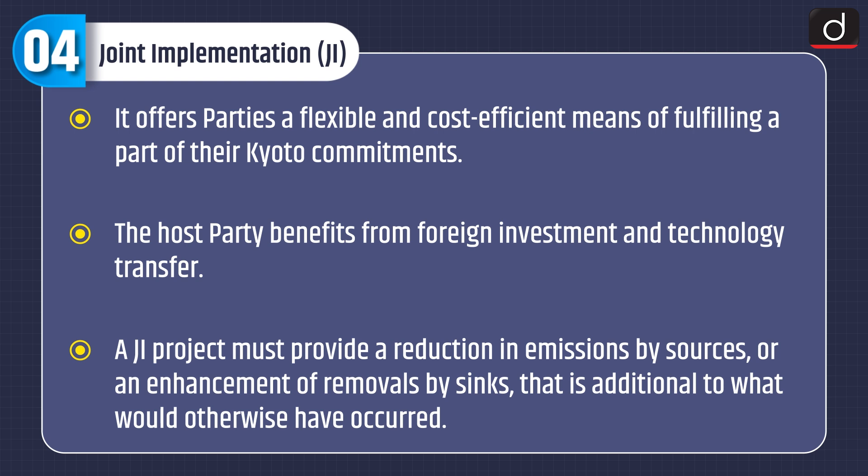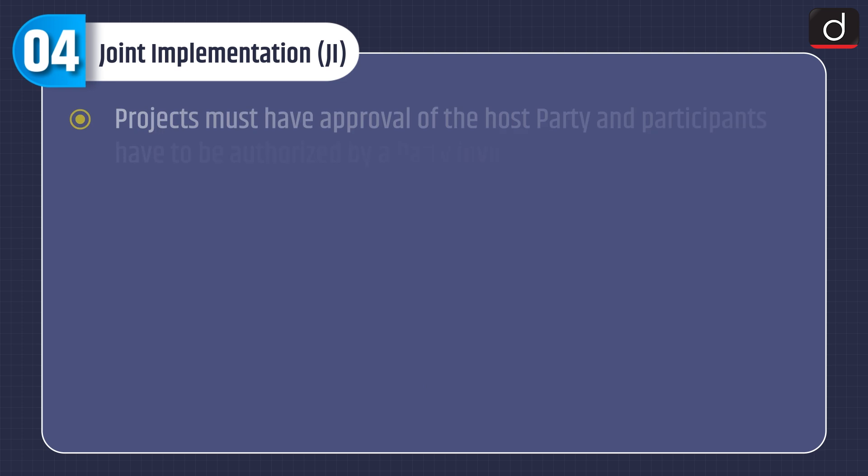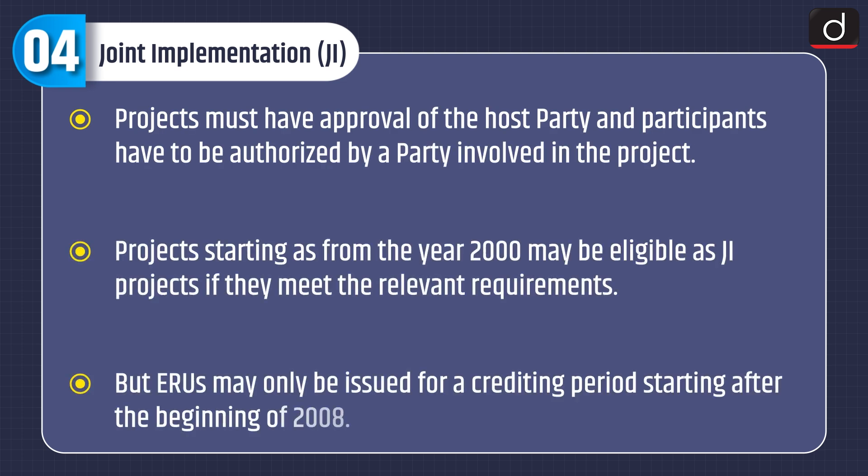The host party benefits from foreign investment and technology transfer. A JI project must provide a reduction in emissions by sources or enhancement of removals by sinks that is additional to what would otherwise have occurred. Projects must have approval of the host party, and participants must be authorized by a party involved. Projects starting from the year 2000 may be eligible as JI projects if they meet the relevant requirements, but ERUs may only be issued for a crediting period starting after the beginning of 2008.